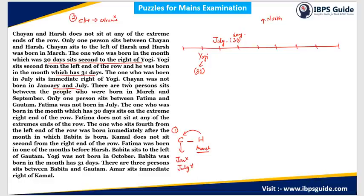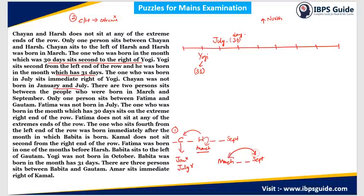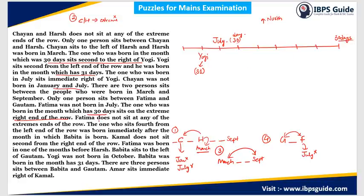Only one person sits between Fatima and Gautam. Fatima was not born in July. The person born in a month with 30 days sits at the extreme right end of the row, position 9. Fatima does not sit at either extreme end of the row. The person sitting fourth from the left was born in the month immediately after the month in which Bhavita is born — so if Bhavita is born in January, this person is born in February.